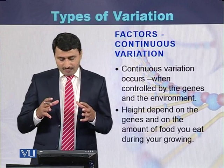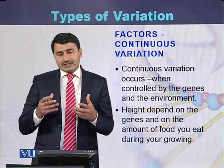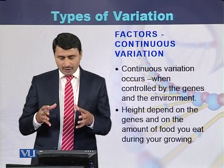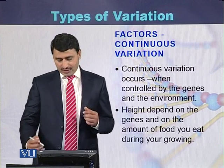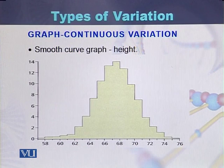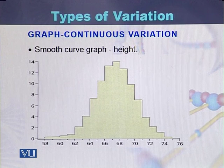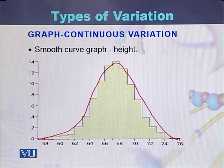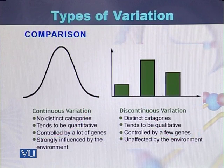Continuous variation occurs when it is controlled by genes as well as by the environment — they jointly control it. Height is an example of this. If we make a graph of continuous variation, we can fit all values into a smooth curve because there are several intermediates between two extremes.